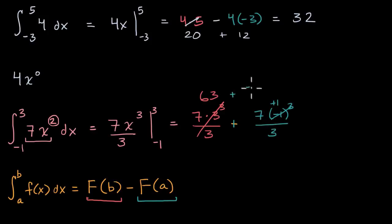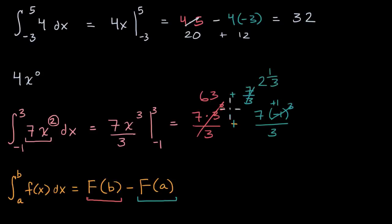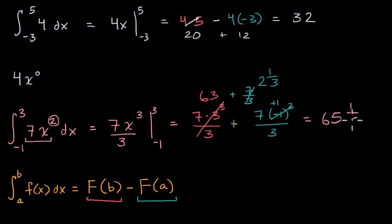Plus seven over three — if we express this as a mixed number, seven over three is the same thing as two and one-third. So when we add everything together, we get 65 and one-third. And we are done.